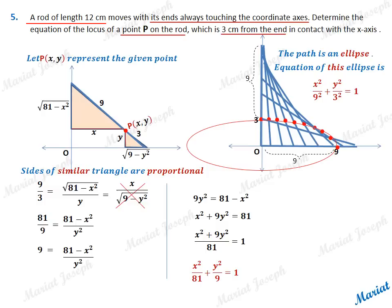Dividing by 81, we get x squared plus 9y squared upon 81 equals 1, which is now separated into two terms: x squared upon 81 plus y squared upon 9 equals 1, which is the equation of the ellipse. This is the path of the point P satisfying the given conditions.